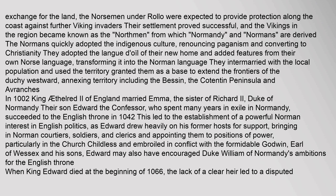They adopted the local dialect and added features from their own Norse language, transforming it into the Norman language. They intermarried with the local population and used the territory granted them as a base to extend the frontiers of the Duchy westward, annexing territory including the Bessin, the Cotentin Peninsula and Avranches. In 1002, King Athelred II of England married Emma, the sister of Richard II, Duke of Normandy. Their son Edward the Confessor, who spent many years in exile in Normandy, succeeded to the English throne in 1042.